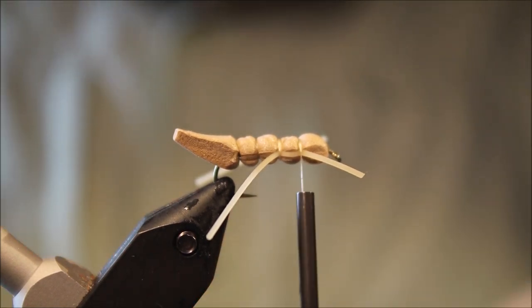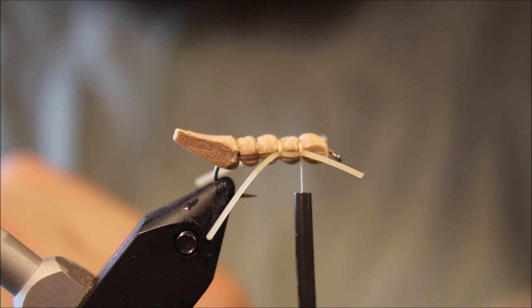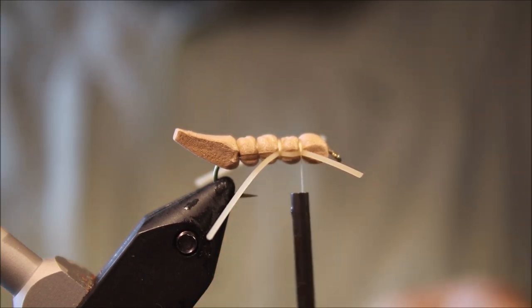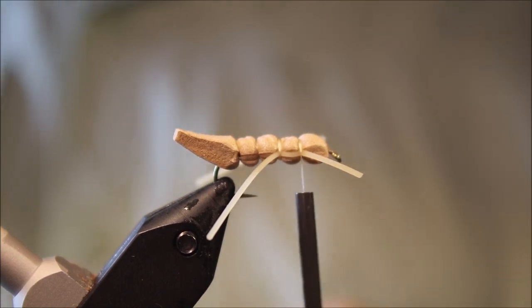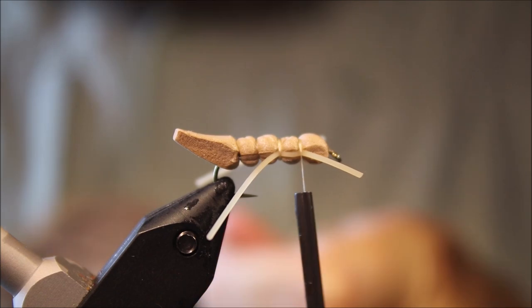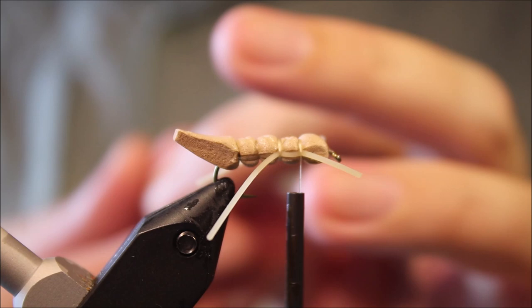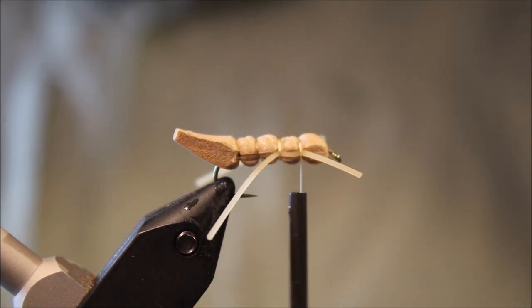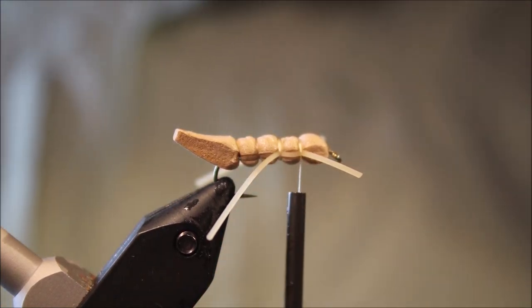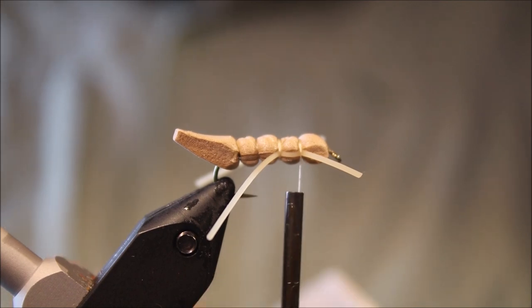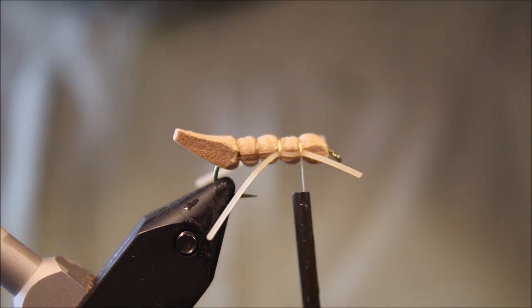Wing is just deer hair or elk hair, doesn't really matter what you use. And it's up to you how much. Because I'm going to be using these on somewhere that's quite slow flowing, flat water, but it has got a lot of grasshopper activity, I'm going for quite a light wing. So get my deer hair, clean out the waste, the underfur and all that, and get it in the stacker.